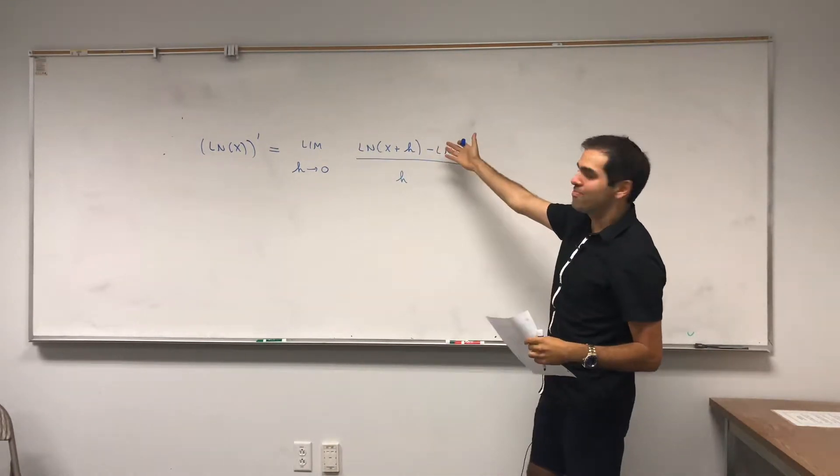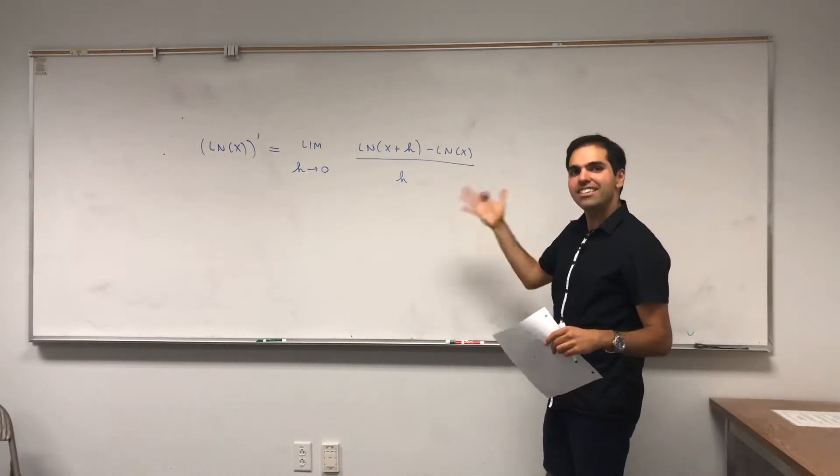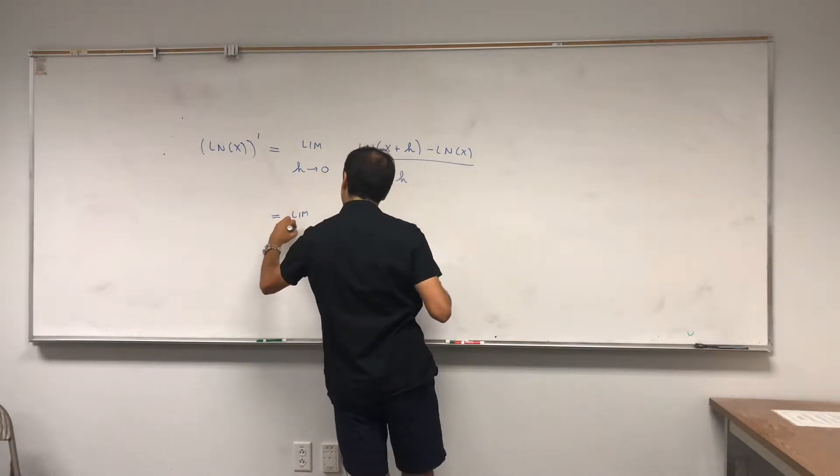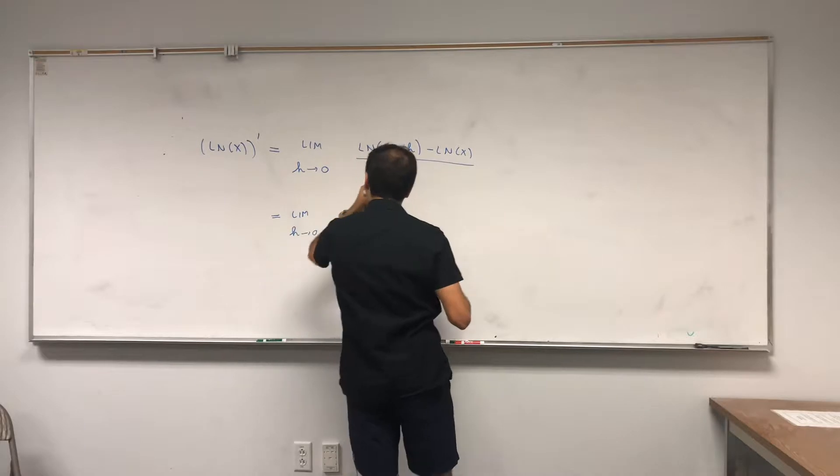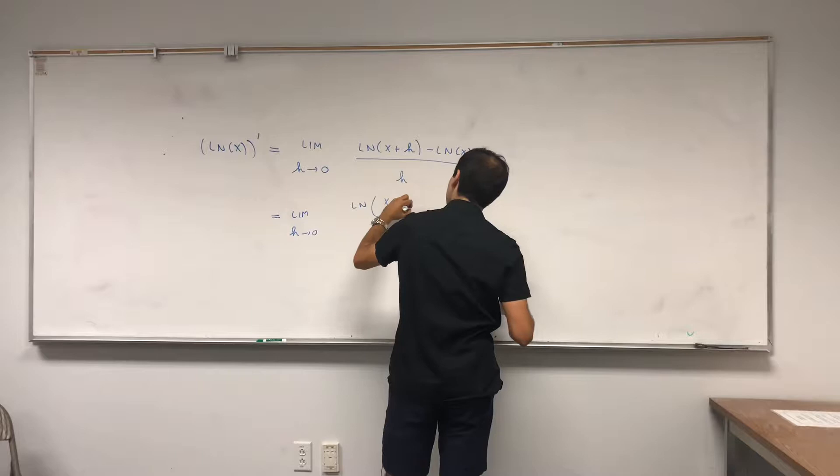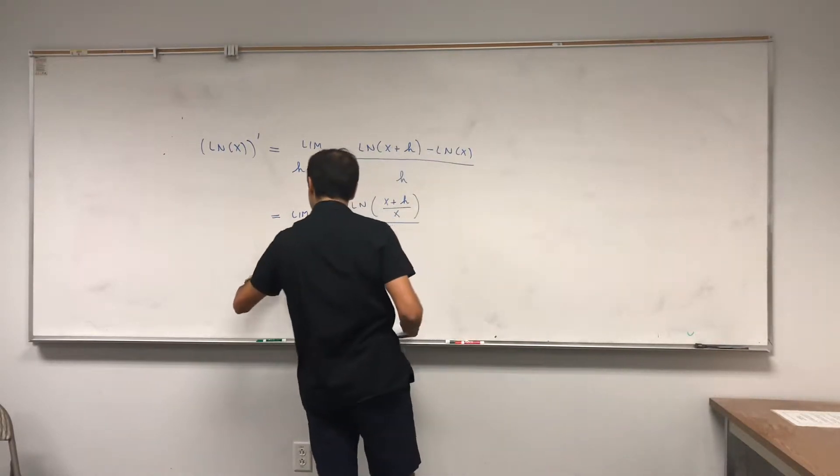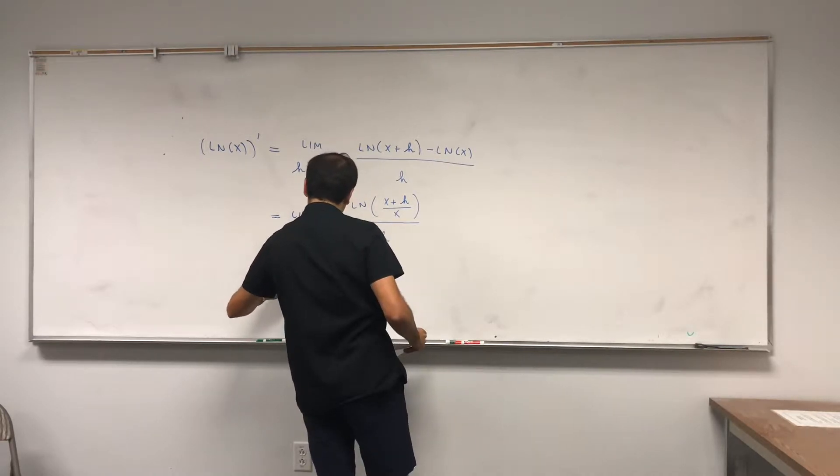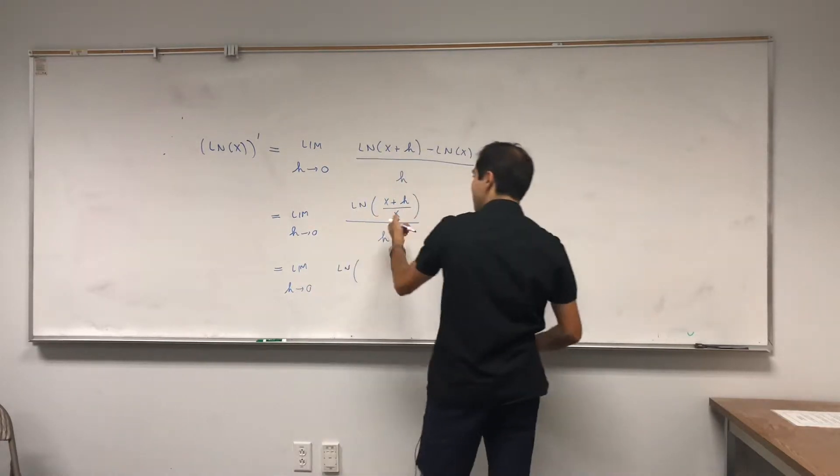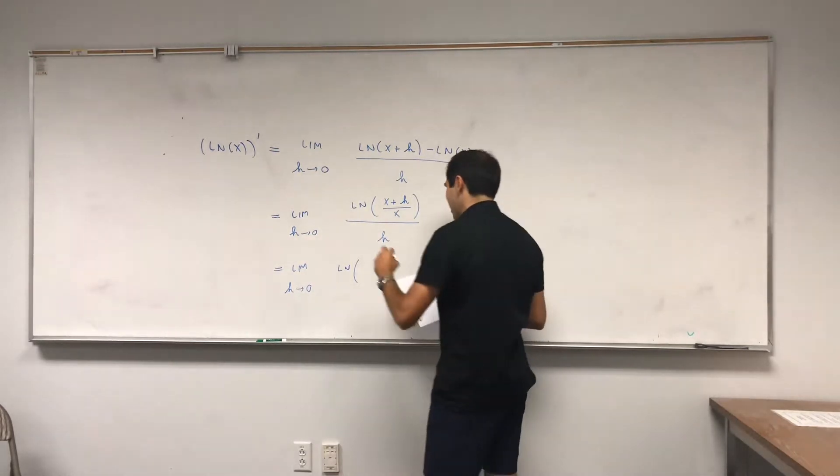But now there's this nice property of ln that ln of a minus ln of b is ln of a over b. So this becomes limit h goes to 0 of ln of x plus h over x, all this divided by h. And limit h goes to 0 of ln of x plus h over x, that's the same as x over x plus h over x.